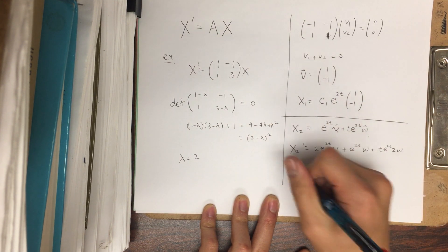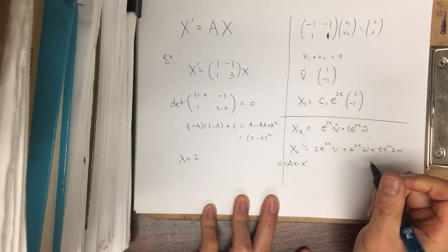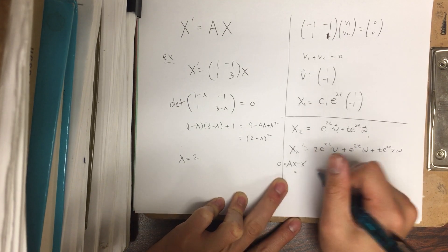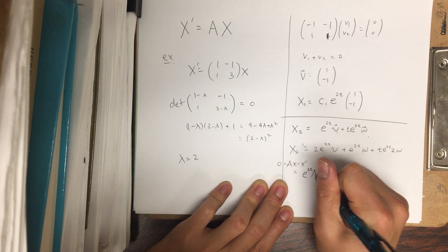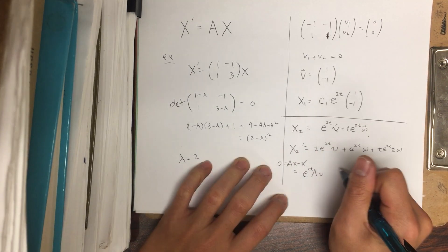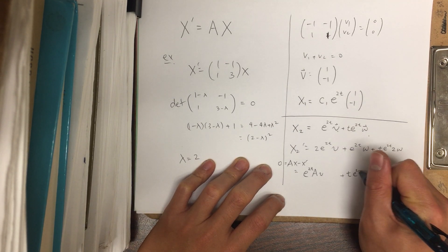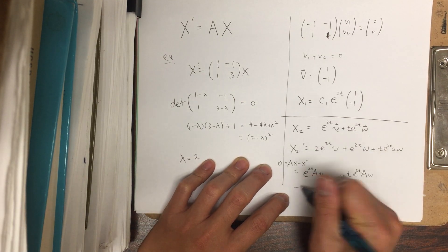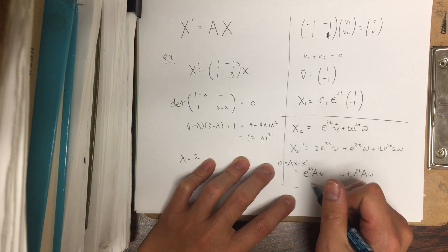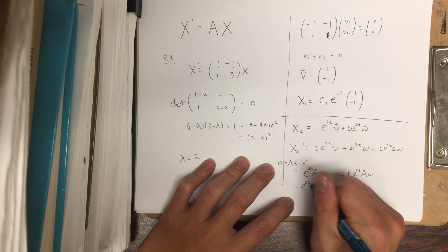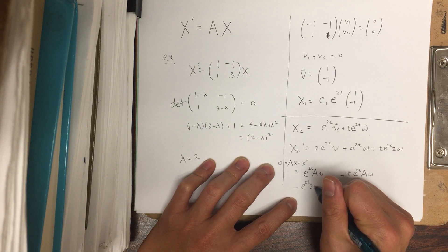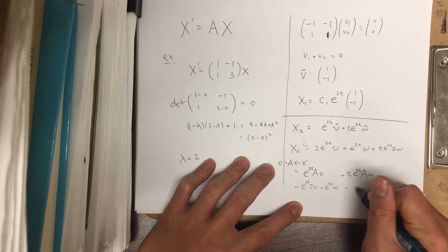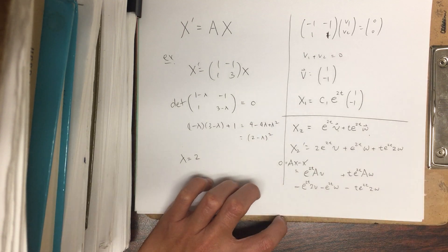And now we plug it into the equation. And so we have Ax - x prime. This is equal to zero. But if we plug these guys in, then we get e^(2t) Av plus t e^(2t) Aw, so that's Ax, minus all this. So this is grouping together the e^(2t) part, so this is just 2v minus e^(2t) w and then minus t e^(2t) times 2w. Okay.